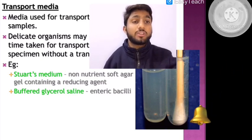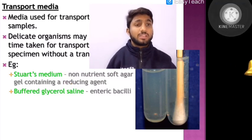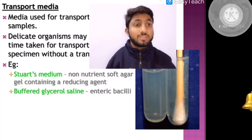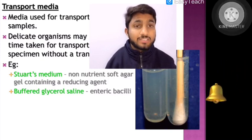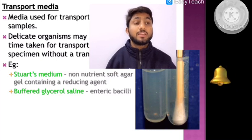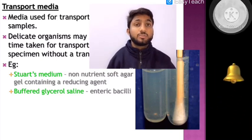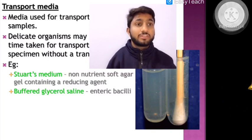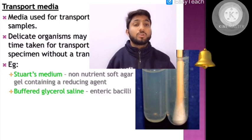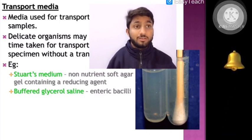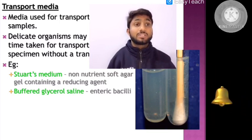The first example is Stuart's medium, also called starch medium — a non-nutrient, soft agar gel containing a reducing agent. It is a semi-solid medium with an agar concentration of around 5–10%. A reducing agent is added to remove oxygen from the medium. This medium is used to transport anaerobic bacteria, and the reducing agent used includes sodium thioglycollate.